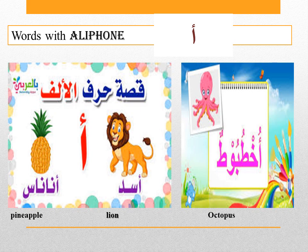The third word might be a little difficult — don't worry, let's focus on the first letter. The word is 'octobotun,' which means octopus. If you notice the difference between the pictures, in the first two words — ananas and asadun — the vowel is 'a,' but in the third word it's 'u.' So it depends on the word: it might be 'a' or it might be 'u.'